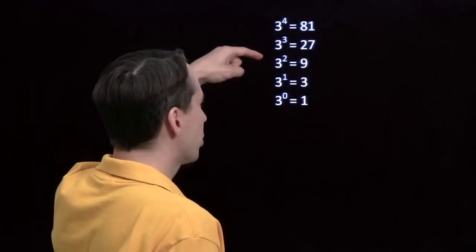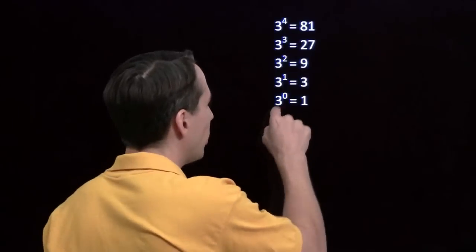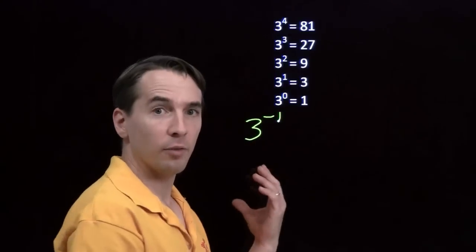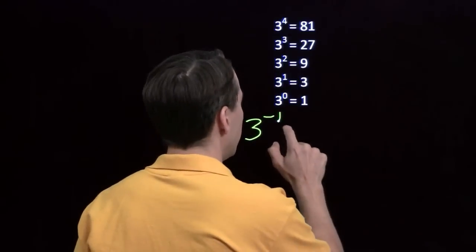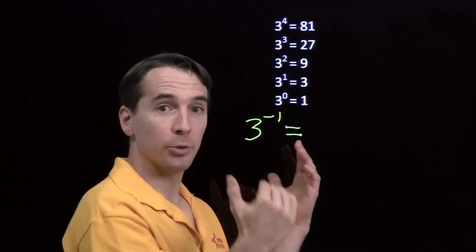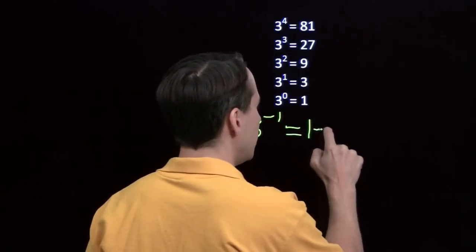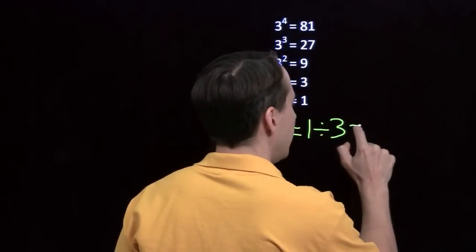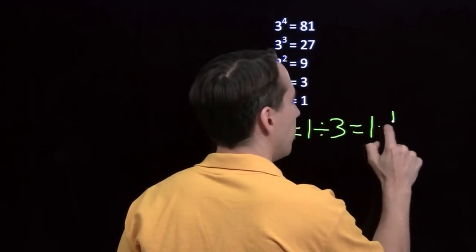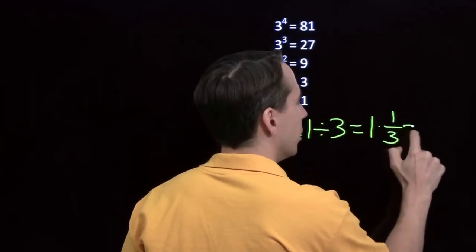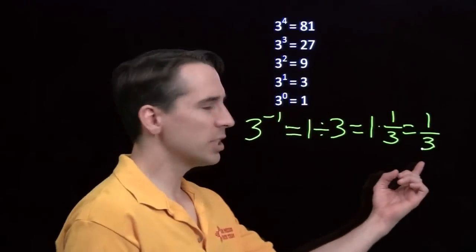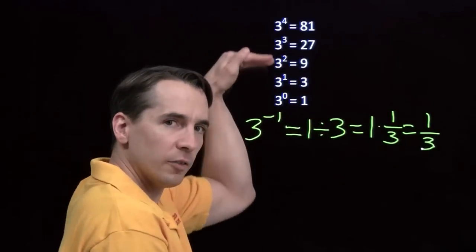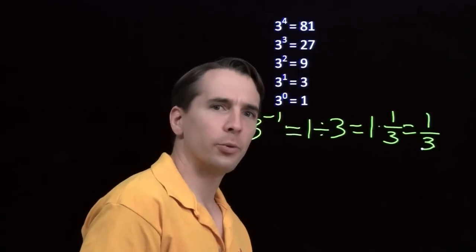Over here on the left, the exponents just go down by 1 each time. So when we go down by 1 from 0, we get to negative 1. So on the left we'll have 3 to the negative 1. Over here on the right, we're dividing by 3 at each step, so if this pattern continues we should get 1 divided by 3. Dividing by 3 just means multiplying by the reciprocal of 3. So we just get the reciprocal of 3 — it looks like 3 to the negative 1 is just the reciprocal of 3.